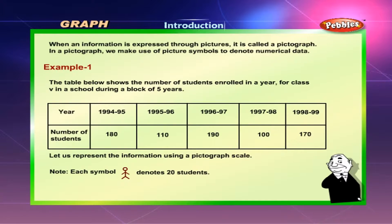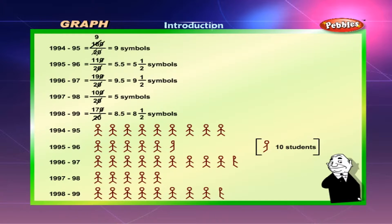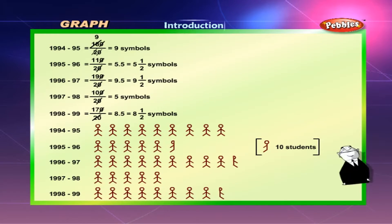Let us represent the information using a pictograph scale. Note: each symbol denotes 20 students. The number of students enrolled in the year 1994-95 is represented by 9 symbols. The number of students enrolled in the year 1995-96 is represented by 5 and a half symbols.